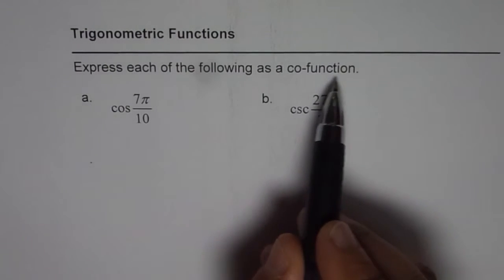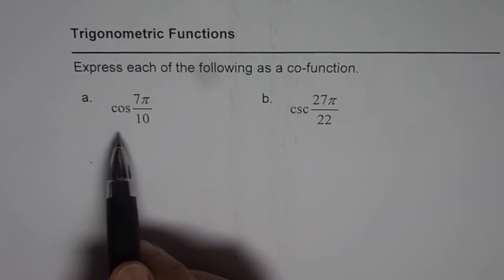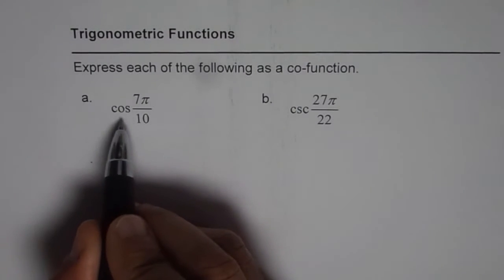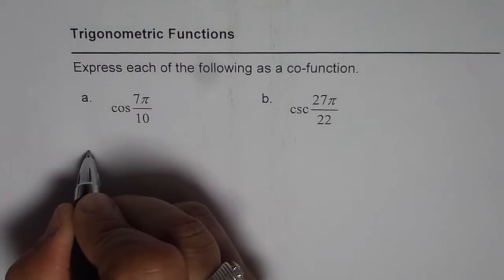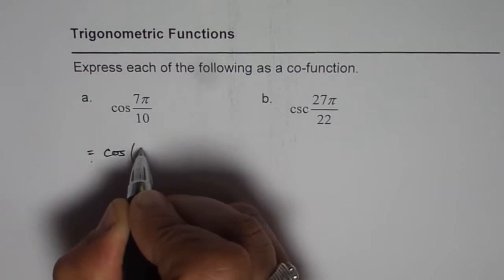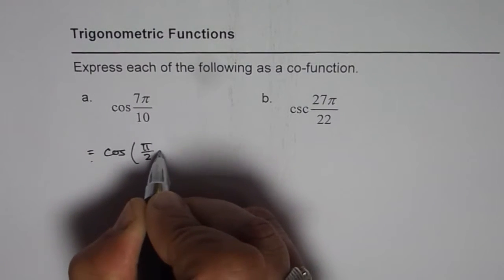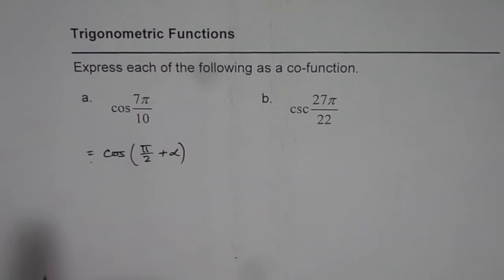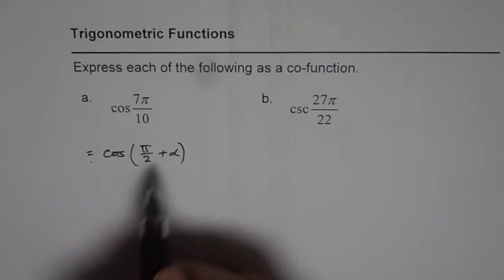The strategy to find co-function is to write the given function with an angle as a combination of π/2. So when we write cos of 7π/10, we could write this as equals to cos of π/2 plus some angle α. So what we are trying to say is we want to write 7π/10 as π/2 plus α.